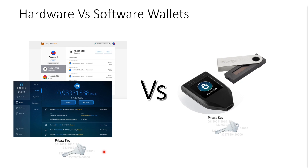Those slight differences in how they store security information have a really big impact on your overall security. If someone compromised your computer with a software wallet, they may be able to access your private key store or interact with your wallet. In the case of a hardware wallet, even if your computer was accessed, they would still need physical access to the hardware device — because that's where all the transaction approving happens. Not only do they have to compromise your computer, they need to physically have the device. That said, this is all dependent on how you store your seed phrases, which is what we're going to cover next.